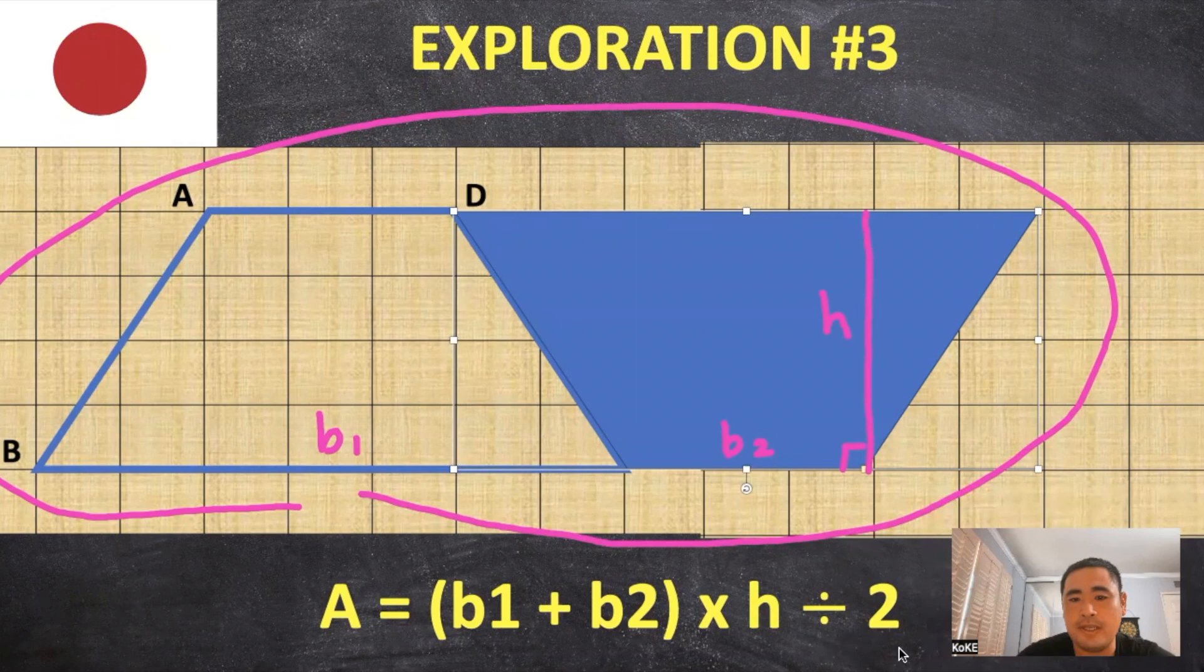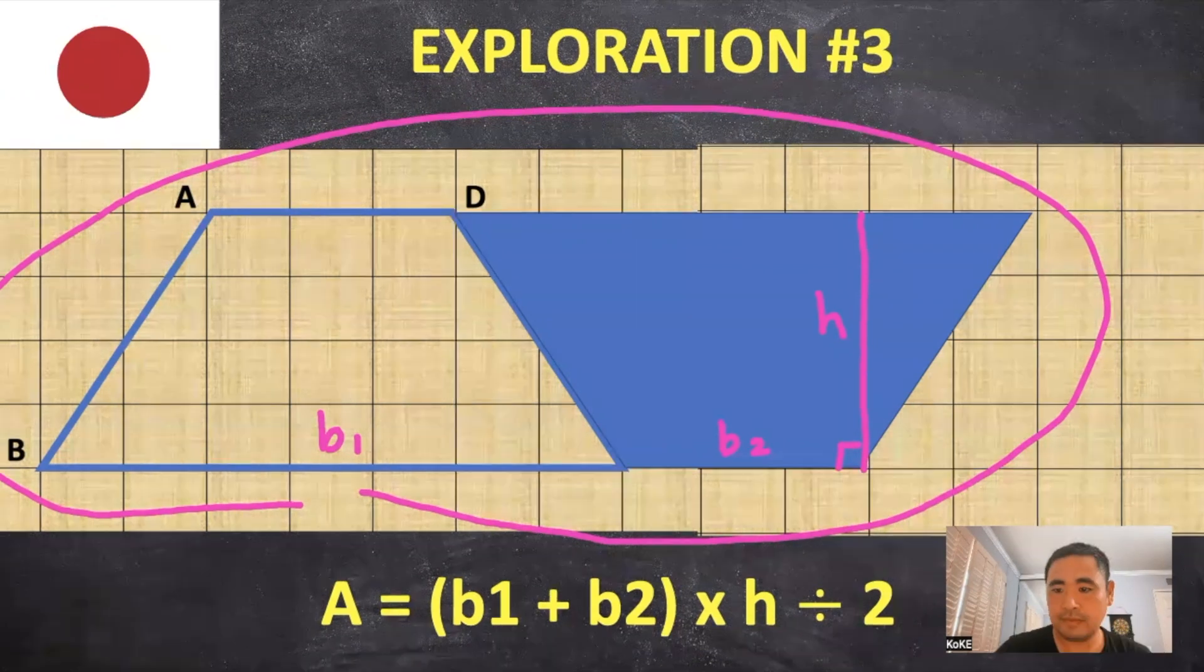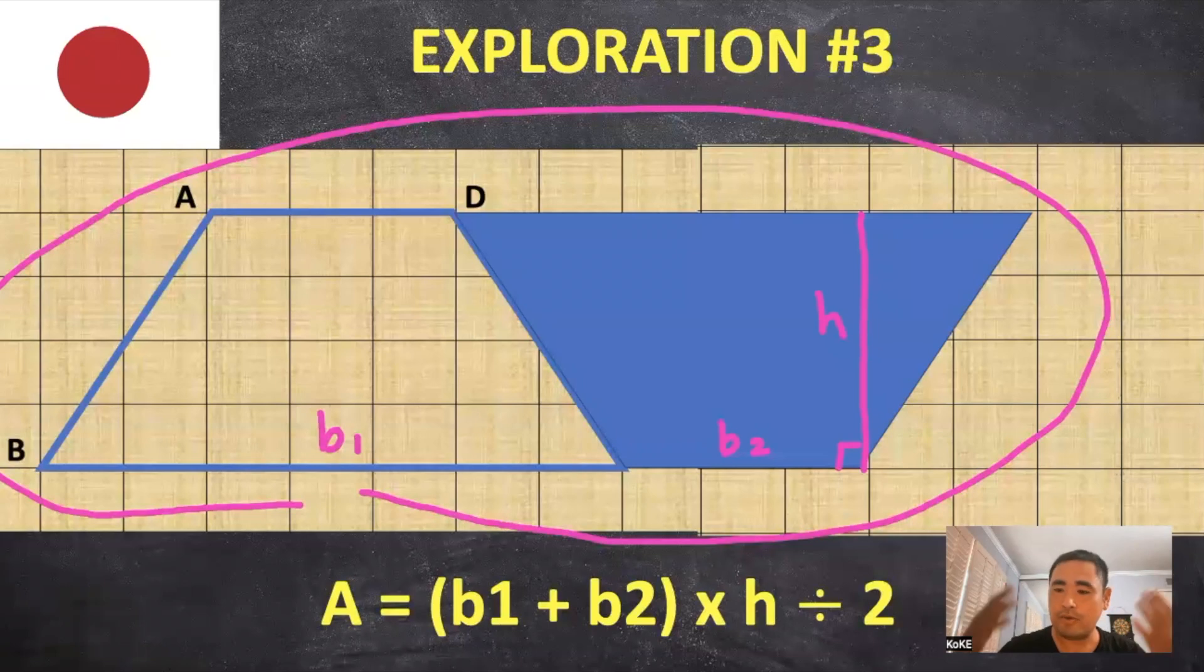But you have to divide it by two because you created an additional trapezoid. So even though down the road students may not remember why or how this formula came about to be, I think it still creates that aha moment in class that's really special.